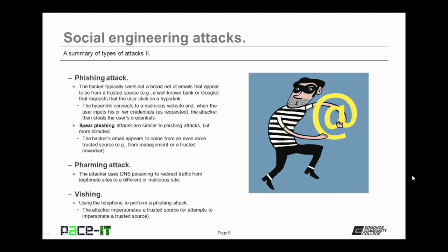Spear phishing is related to the phishing attack and the attacks are very similar, but spear phishing is more directed. The hacker's email appears to come from an even more trusted source, such as the management of the organization that the user works for, or from a trusted co-worker. Pharming attacks are also a common type of social engineering attack, where the attacker uses DNS poisoning to redirect traffic from a legitimate site to a malicious website. Finally, there's vishing, which uses the telephone to perform a phishing attack. The attacker impersonates a trusted source. Vishing attacks are hard to pull off, but they are successful on occasion.